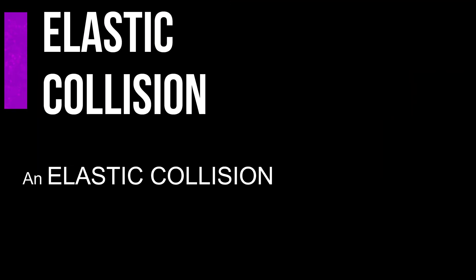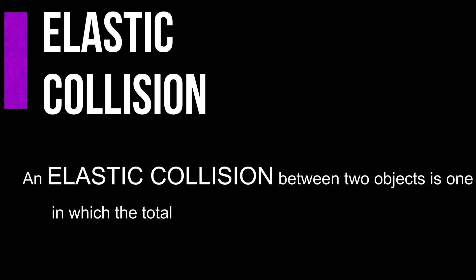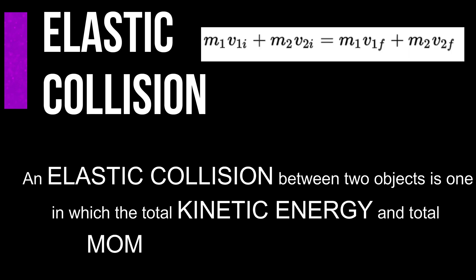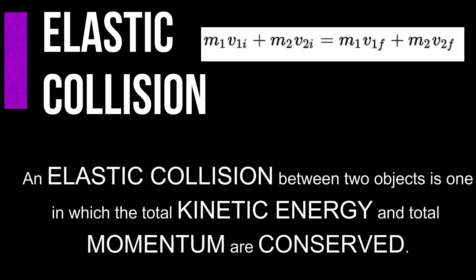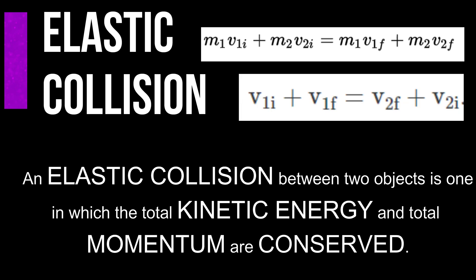An elastic collision between two objects is one in which the total kinetic energy and the total momentum are conserved. The first equation is just the conservation of momentum, where the initial momentum of the system must equal the final momentum after the collision. The second equation is a derivation of the kinetic energy conservation equation, but we're not going to get into detail on that one here because we're going to be solving inelastic collisions.